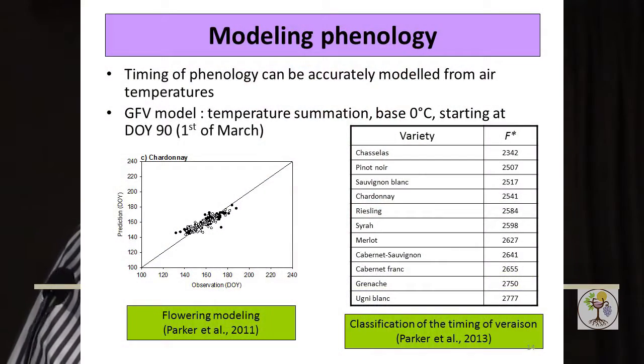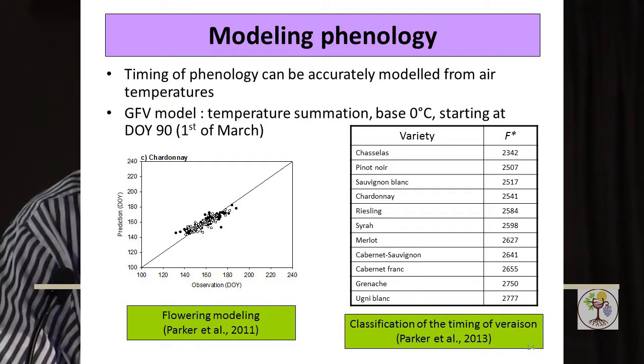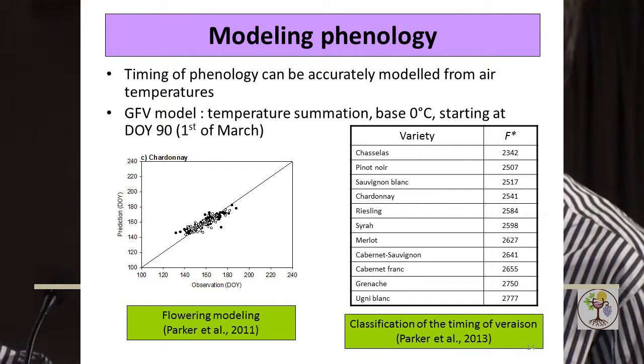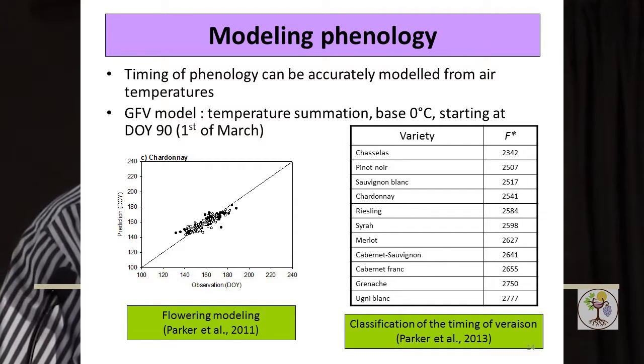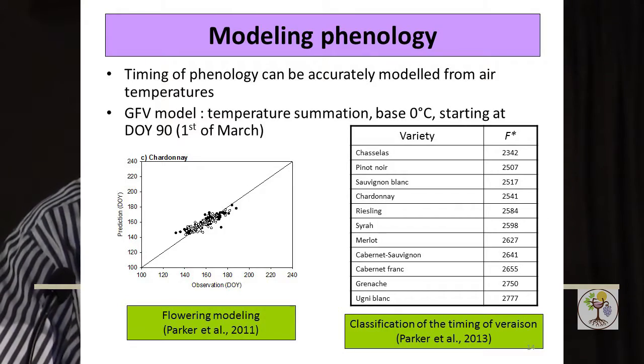Phenology can very accurately be modeled. With one of my PhD students, Amber Parker, we developed a phenology model which works very well for flowering and veraison. It's called the GFV — grapevine flowering veraison model — and in a subsequent paper we published a classification for the timing of flowering and veraison. We've classified over a hundred varieties for the timing of flowering and veraison with this model. We're currently working on a sugar ripeness model based on the same principle to predict sugar ripeness for a wide range of varieties, so you can combine temperature data with phenology models to know the timing of ripeness.